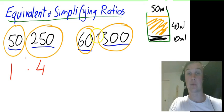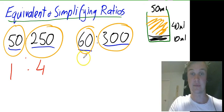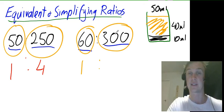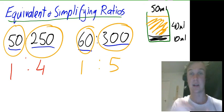Now in the second one, the common factor between 60 and 300 is 60. So 60 divided by 60 will be 1. And 300 divided by 60 will be 5. So I can work out by simplifying my ratios.